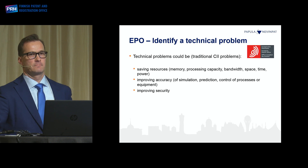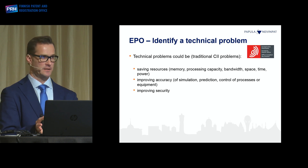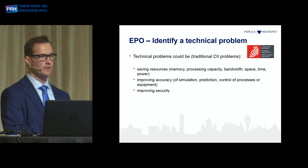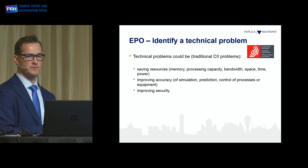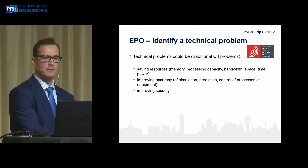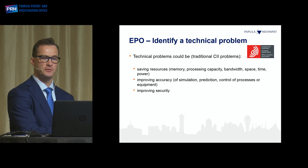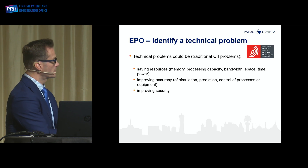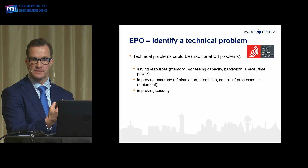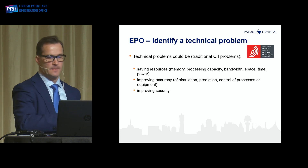Looking at the technical problem — whether the invention has a technical contribution relates to whether it solves a technical problem by technical means. The classical examples for computer-implemented inventions are: if you save computer memory or processing capacity, if you improve accuracy of simulation or prediction, or if you improve security. These are traditional technical benefits. If your invention solves these, yes, you'll get a patent — no problem.